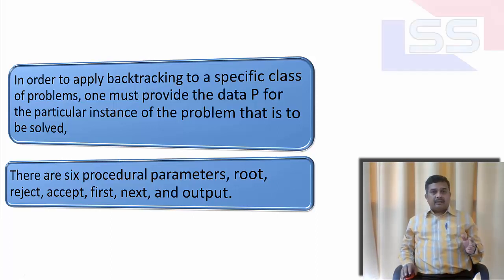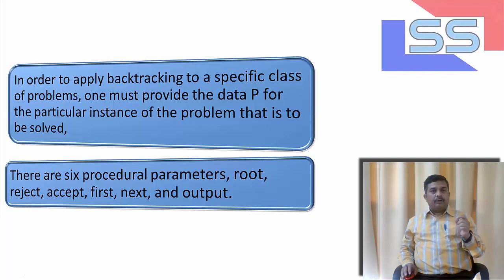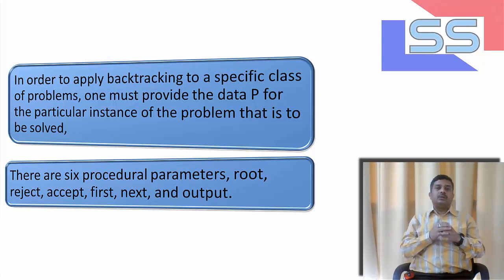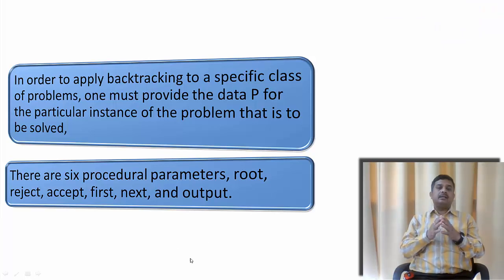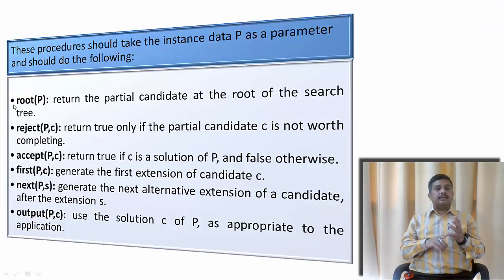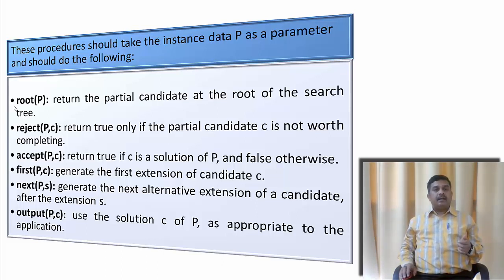Now, in order to apply backtracking to a specific class of problem, one must provide data p for a particular instance of a problem that is to be solved. Basically, to have this backtracking problem solved, we generally take 6 procedural parameters. That is root, reject, accept, first, next and the output. Let us see what are they.